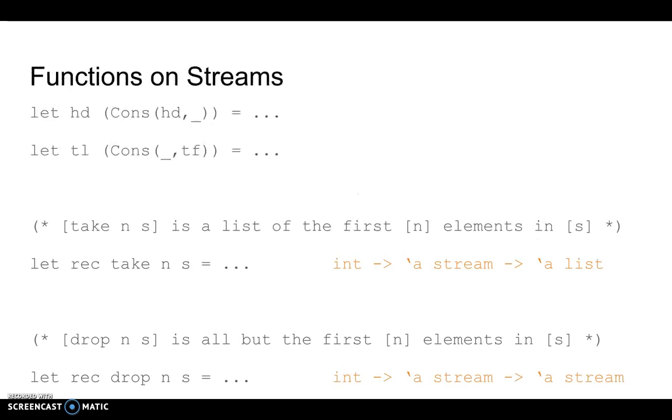Now let's write some functions on streams. Head and tail are very similar to the head and tail for lists. Head is, of course, going to return a value, and that value being the current element of the stream, so in this case just hd.